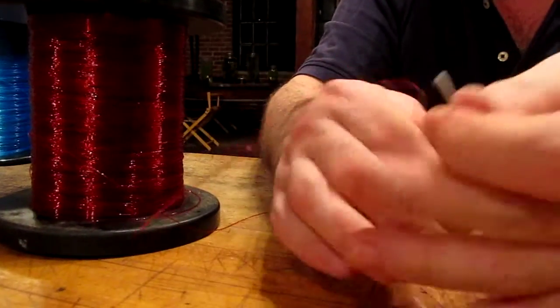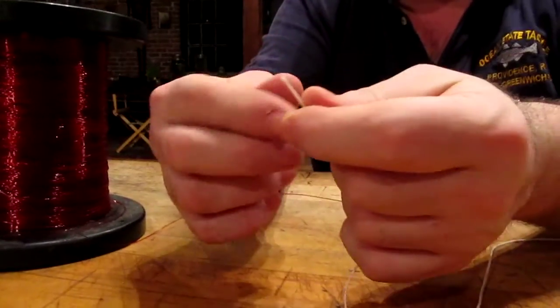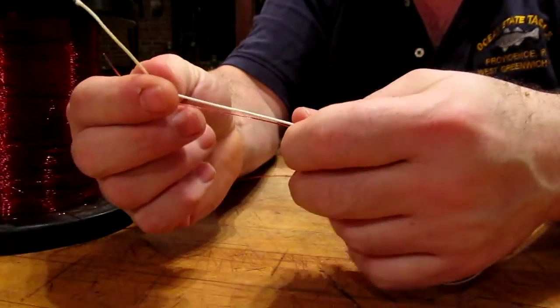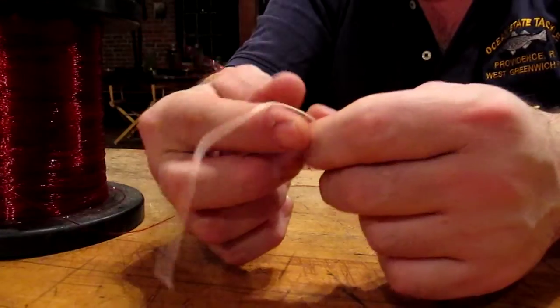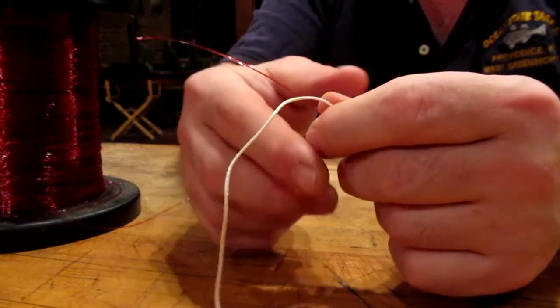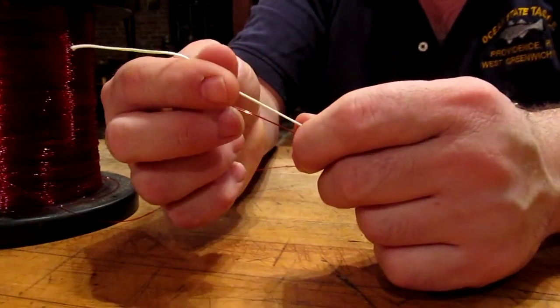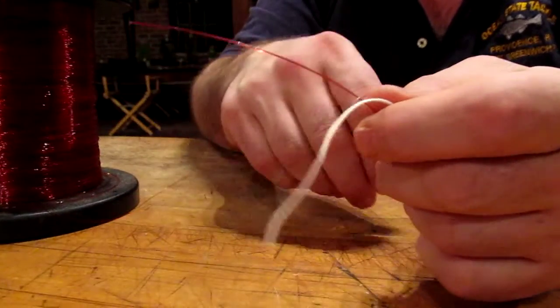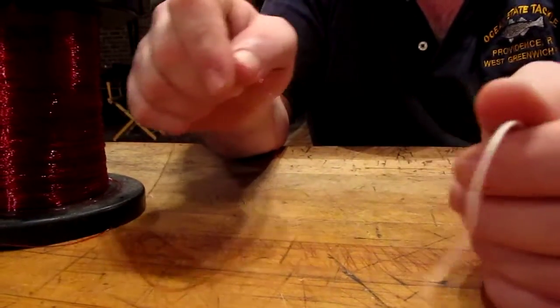Dave Hino from Ocean State Tackle. I'm going to show you how to marry two lines together. This knot's called the uni-to-uni, also known as a fisherman's knot. This knot probably goes back thousands of years. It was probably first used with vines.